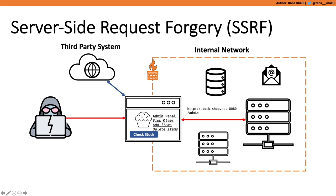The admin page shows options like view items, add items, and delete items. As an attacker you can't simply click those buttons directly because the firewall blocks external requests. However, you can right-click, view the source code, find the URL for adding or deleting an item, and then re-exploit the SSRF vulnerability by sending that URL to the service. Because of the trust relationship, the service will process the request and delete or add the specified items. This is a classic example of exploiting SSRF to gain access to sensitive functionality in other applications.